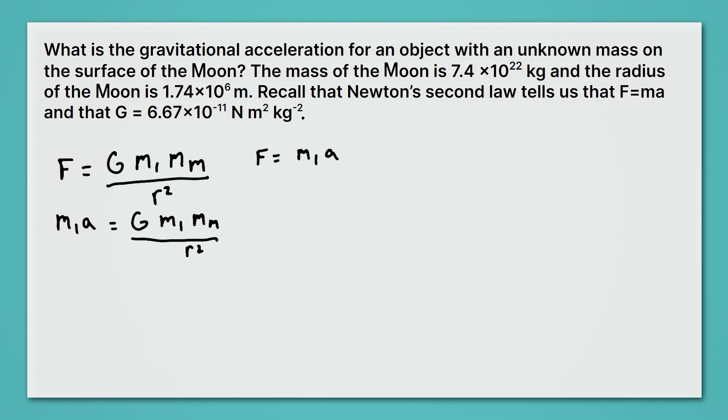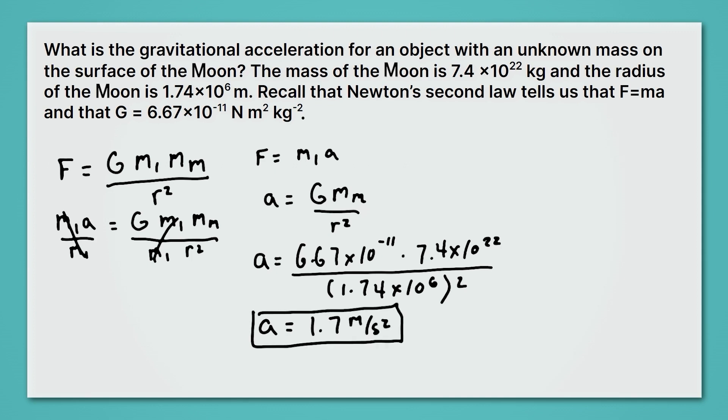And once again, we'll divide both sides by mass 1. And once again, mass 1 falls out of the equation entirely, and we get acceleration equals G times the mass of the moon, divided by R squared. And so now we can solve for the acceleration by plugging in G, which we know is 6.67 times 10 to the minus 11, times the mass of the moon, which is 7.4 times 10 to the 22nd, all divided by the distance squared, which is 1.74 times 10 to the 6th squared. When we plug that into our calculator and round to two sig figs, we get 1.7 meters per second squared. That's the acceleration you would experience on the moon. Once again, doesn't depend on mass.